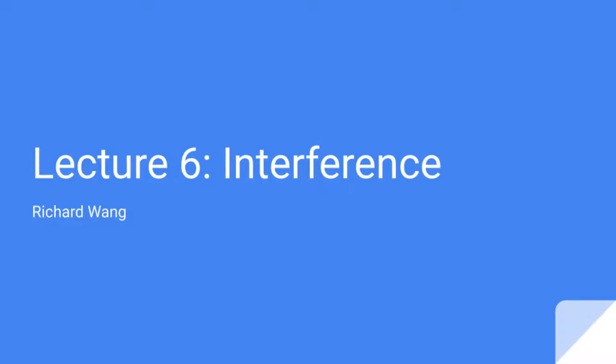Hello everyone, and welcome back to lecture 6 of our introductory course to quantum computing. Today, we'll be talking about the final quantum mechanical phenomena that allow quantum computers to gain quantum advantage over classical computers. And this phenomena is interference.